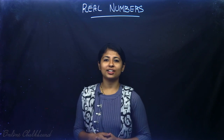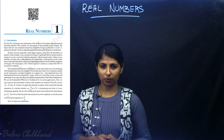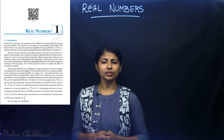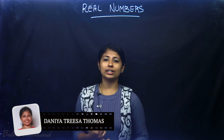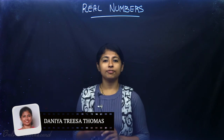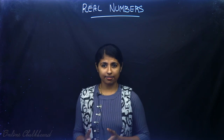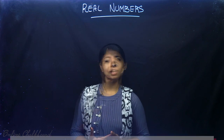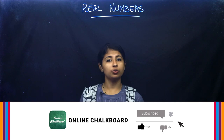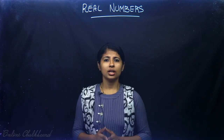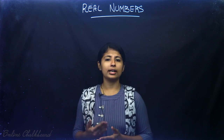Hello friends, welcome back to Online Chalkboard. We are dealing with Class 10 Chapter 1 Real Numbers. So far we have discussed Euclid's division lemma, Euclid's division algorithm, and the fundamental theorem of arithmetic, and we have learned how to calculate HCF and LCM using these. Today we would be revisiting irrational numbers and learning how to prove a number is irrational using the fundamental theorem of arithmetic.